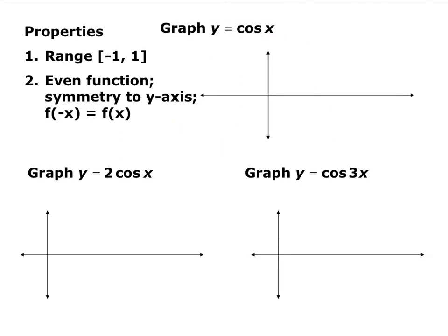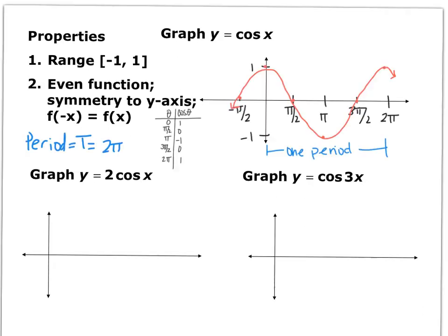Now make a table for cosine of x using the same angles to find the parent function y = cosine(x). The range of cosine is negative 1 to 1. It is also periodic with a period of 2π. On this graph, you start high at 1 when x = 0, go down to the middle, down to negative 1, back up to the middle, and back up to positive 1.